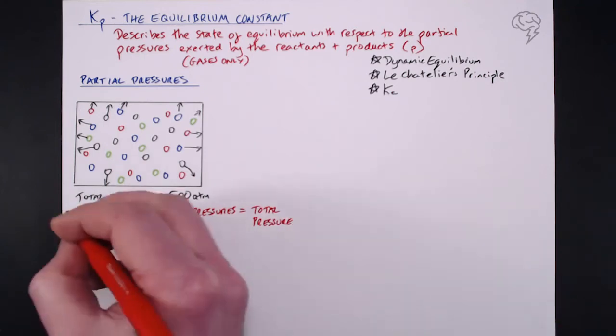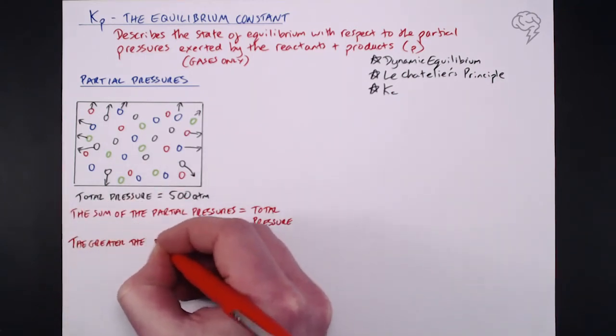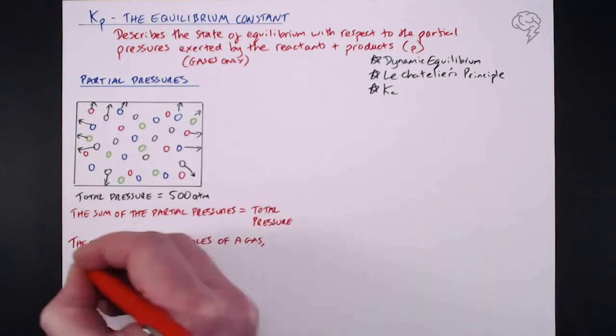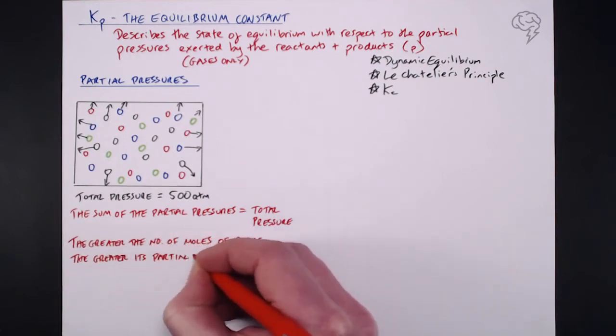So the sum of the partial pressures equals the total pressure. And what we can also say is that the greater the number of moles of a gas, the greater its partial pressure. And that makes sense because the more moles of something you have within a closed system, the more pressure it's going to exert on the walls.